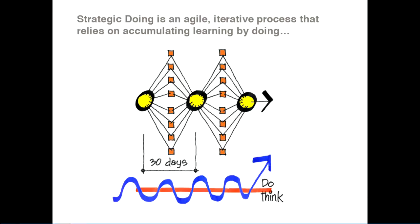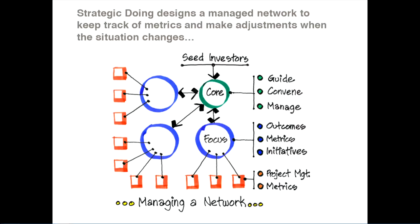So what does strategic doing look like when we actually deploy it? Well, it actually looks more like this. It's a process where we're thinking and doing continuously and we're coming together on a regular basis. But in between those regular gatherings, individuals in the network are off doing their 30-day task. So it might be an hour, it might be two hours, it might be three hours, but certainly it's not very much time because everybody's really focused on their own day job. And most of these challenges we're dealing with are community challenges.